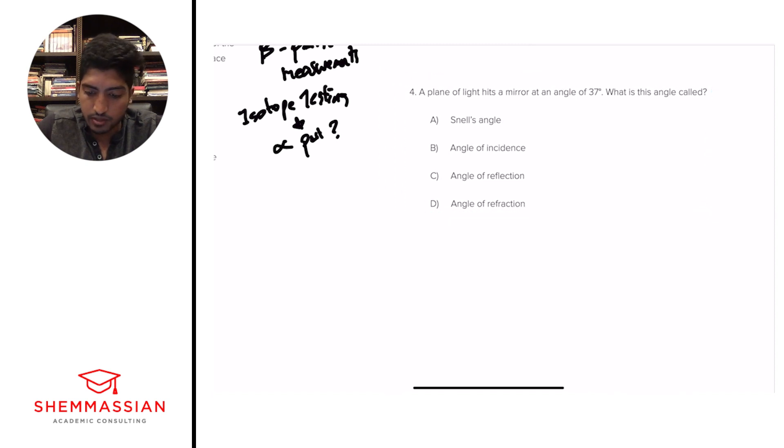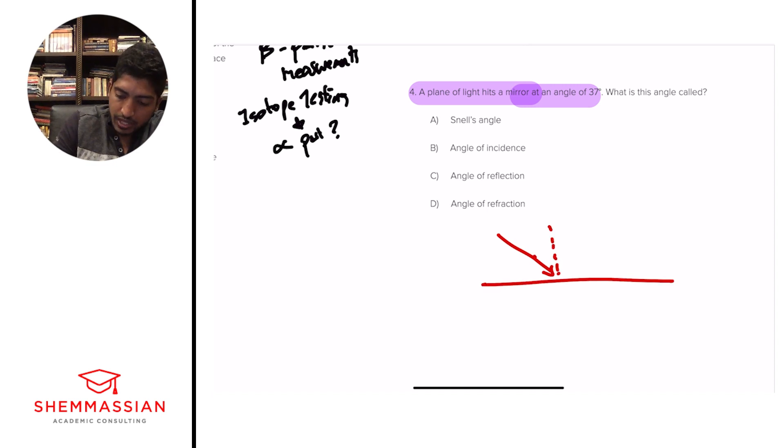Alright, question number four. A plane of light hits a mirror at an angle of 37 degrees. What is this angle called? A, Snell's angle. B, angle of incidence. C, angle of reflection. Or D, angle of refraction. Alright, so this is exactly that same diagram we drew in that first question. We needed to say, oh, we have an angle that light's coming in on. It's going out or it's refracting in a certain way. So if the plane of light is hitting the mirror at an angle of 37, that means that we're going like this. We have our diagram. We're hitting it at 37 degrees. And so what did we say this angle was called? The angle of incidence. So B is our standard answer. But let's go through the other answer choices just to make sure.